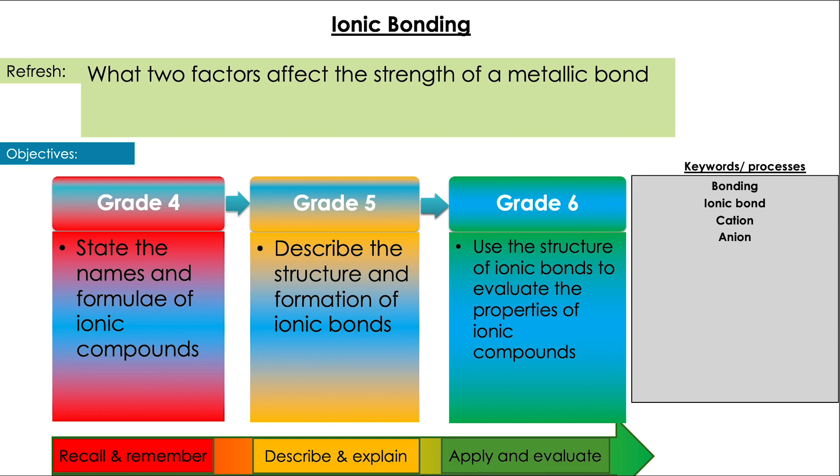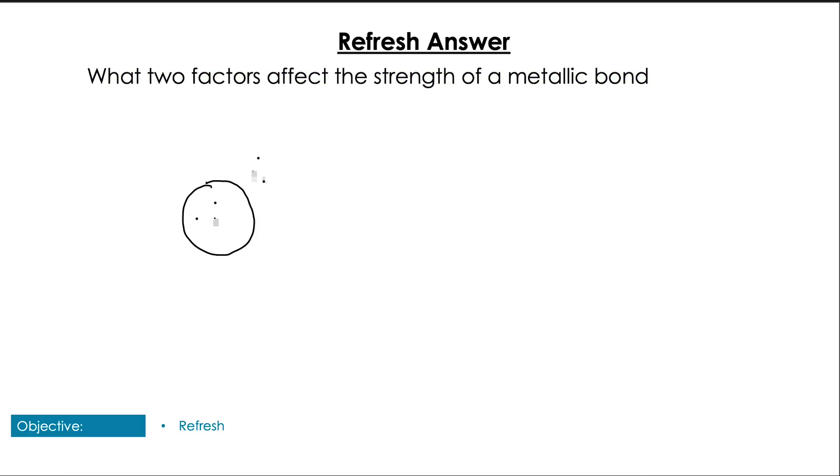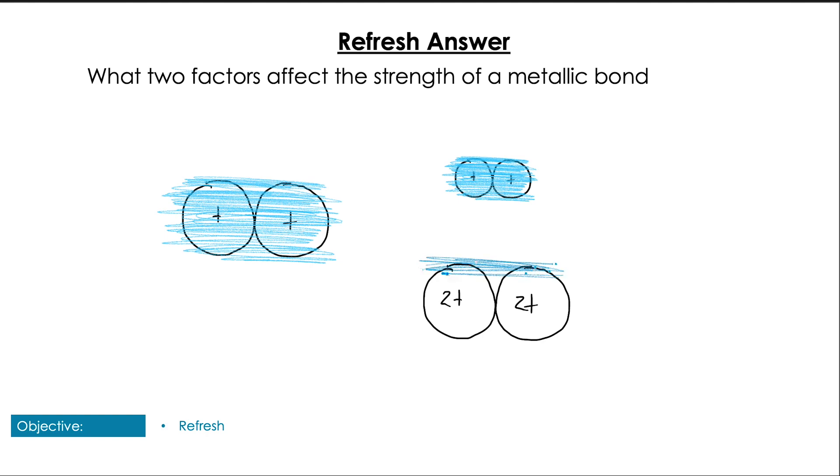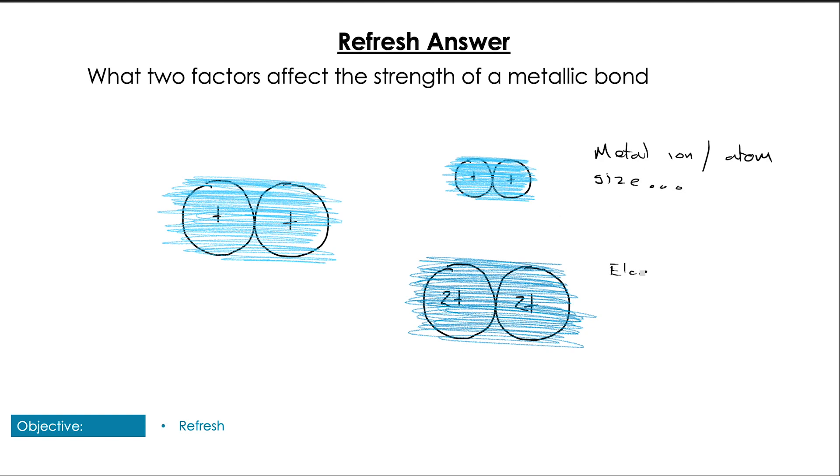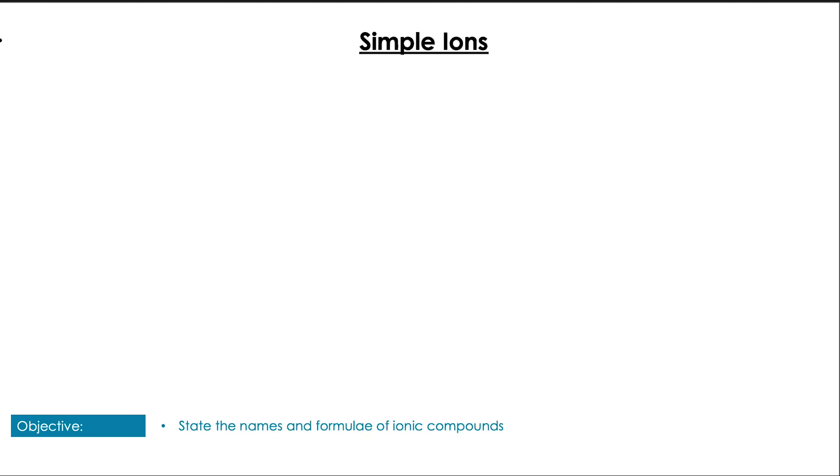Pause the video and see if you can remember that from the last video. Hopefully you remembered that when we're thinking about metallic bonds, their strength is regulated by the charge density of the individual ions bonding together. This is regulated by two main factors: one, the size - small size gives us larger charge density - and the overall charge or the number of electrons given to the delocalized electron cloud.